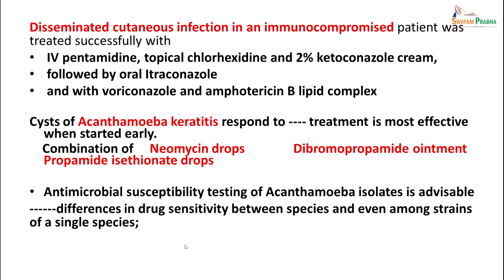Meningitis was also treated successfully in two children using oral trimethoprim-sulfamethoxazole, rifampicin, and ketoconazole. Disseminated cutaneous infection in an immunocompromised patient was treated with IV pentamidine, chlorhexidine, and 2% ketoconazole cream followed by oral itraconazole or voriconazole and amphotericin B lipid complex. Cysts of amoebic keratitis usually respond if treated early to a combination of neomycin drops, dibromopropamidine ointment, and propamidine isethionate drops. Antimicrobial susceptibility testing of Acanthamoeba isolates is advisable, as differences in drug sensitivity can occur between distinct species and even between strains of the same species.